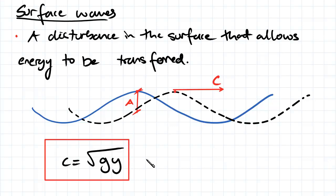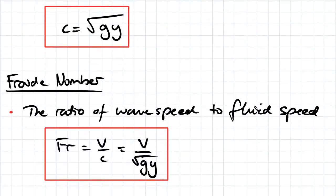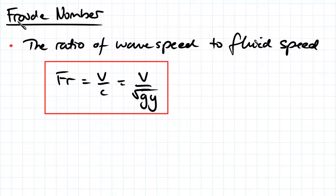The wave speed is actually independent of the amplitude of our disturbance wave. From this, we're able to derive what's called Froude number. Froude number is the ratio of wave speed to fluid speed. Using the wave speed equation we looked at before, Froude number is equal to v over √(gy) — so fluid velocity divided by the square root of gravity times the depth of our fluid.